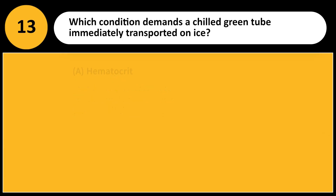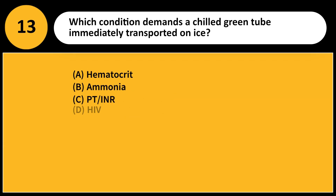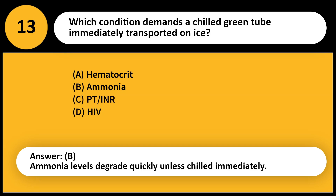Which condition demands a chilled green tube immediately transported on ice? A. Hematocrit. B. Ammonia. C. PT/INR. D. HIV. Answer: B. Ammonia levels degrade quickly unless chilled immediately.